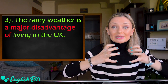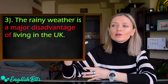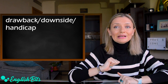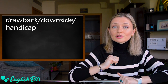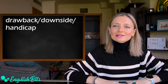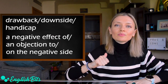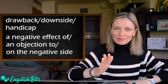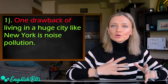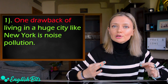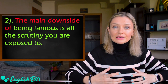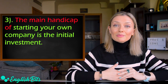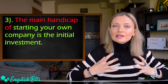Now we're going to look at some synonyms for the word disadvantage. Instead of saying disadvantage all the time, we can say drawback, downside, handicap, negative effect of something, an objection to, or on the negative side. Examples: one drawback of living in a huge city like New York is noise pollution; the main downside of being famous is all the scrutiny you're exposed to; and the main handicap of starting your own company is the initial investment.